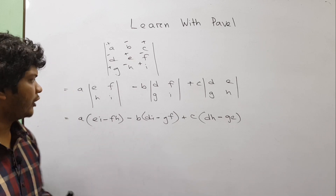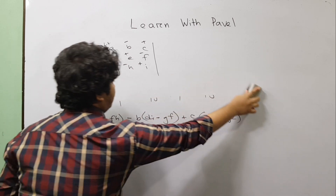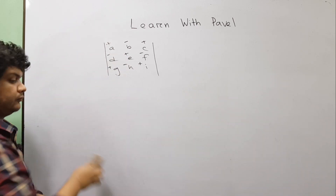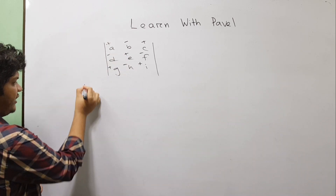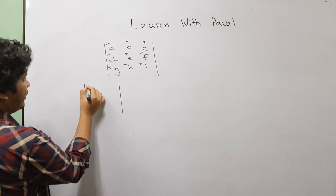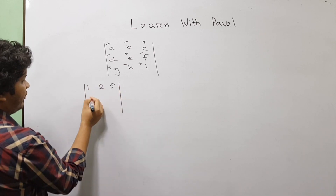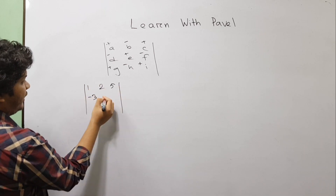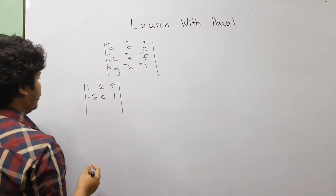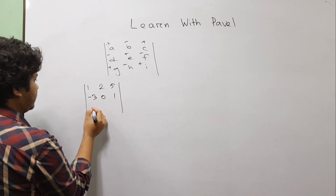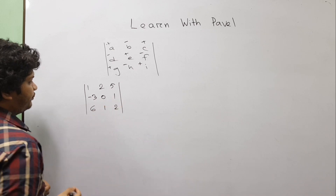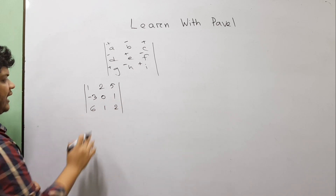Let's solve one problem. We will calculate the determinant of the matrix with values: 1, 2, 5; -3, 0, 1; 6, 1, 2.